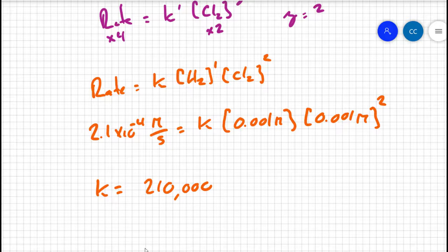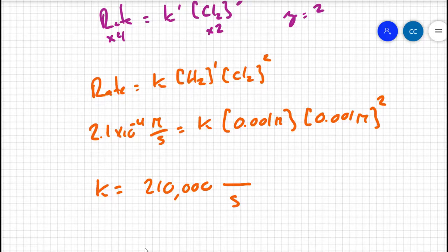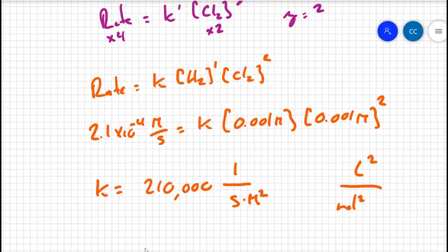We need to be careful with units. We want to end up with molarity per second. On the right side we have molarity times molarity squared, giving molarity cubed. To make the units balance, K must have units of one over seconds times molarity squared, written as M⁻²·s⁻¹, or equivalently L²·mol⁻²·s⁻¹. The units for K will always depend on the exponents in the rate law.